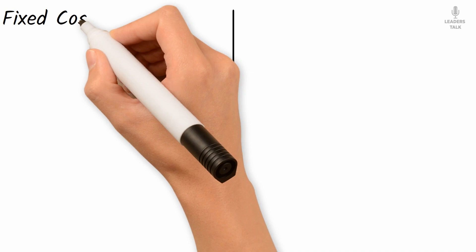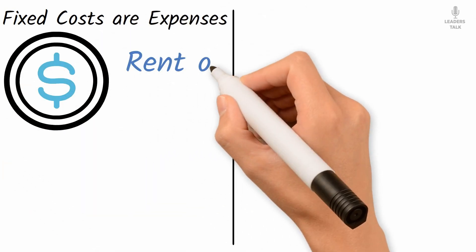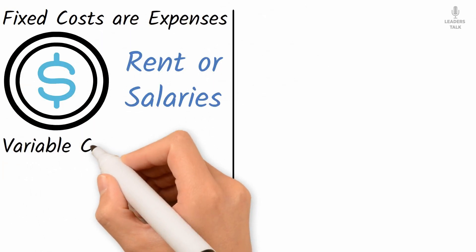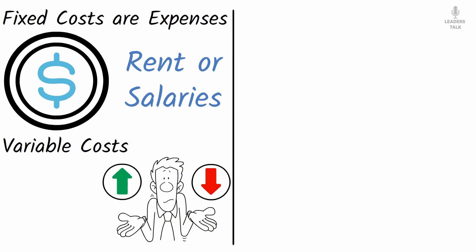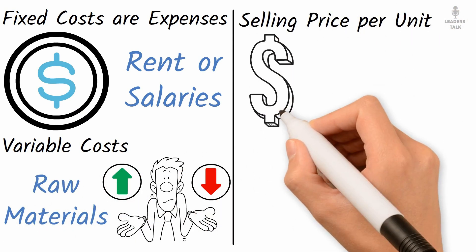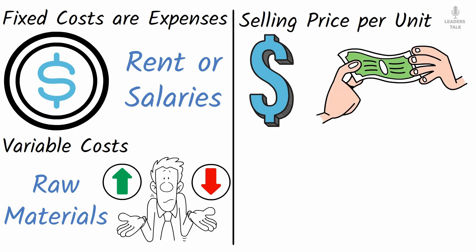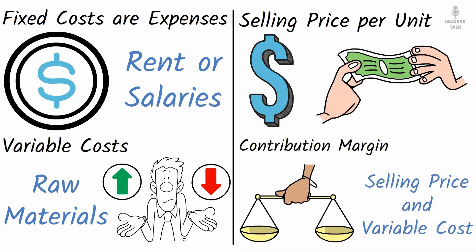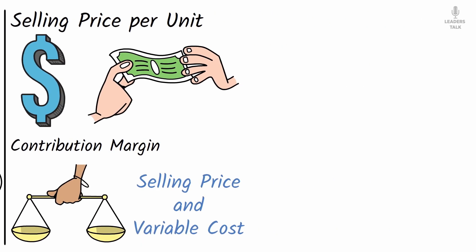Fixed costs are expenses that remain constant, such as rent or salaries. Variable costs are costs that vary with production levels, such as raw materials. Selling price per unit is price at which you sell your product or service. Contribution margin is the difference between the selling price and variable costs, showing how much each unit contributes to covering fixed costs.